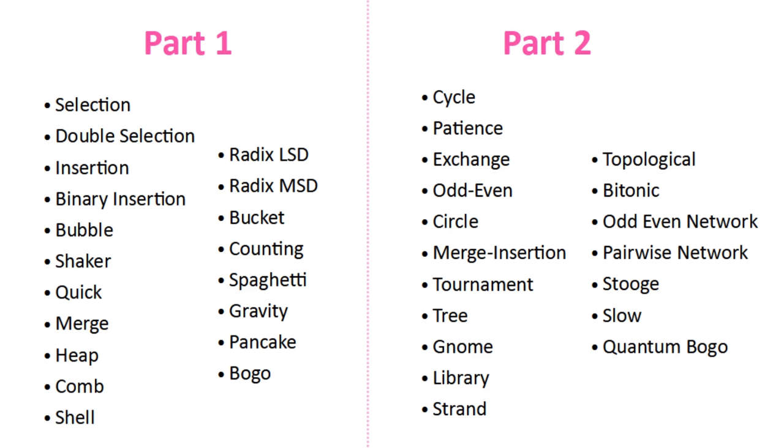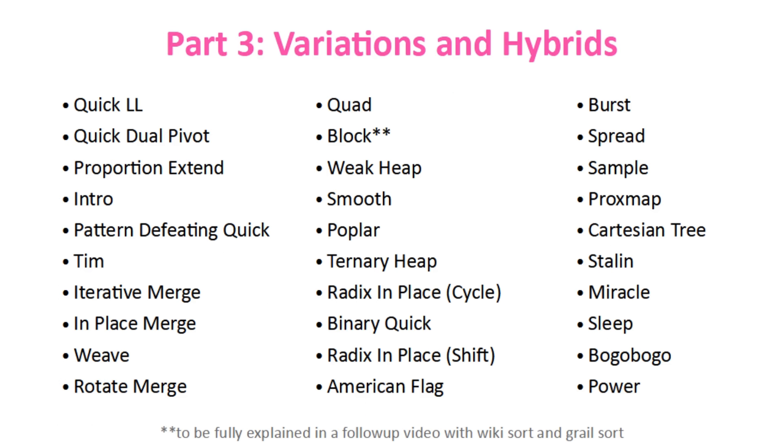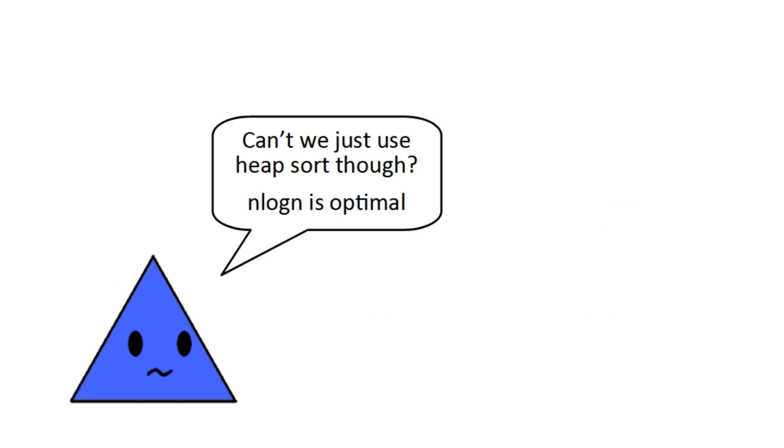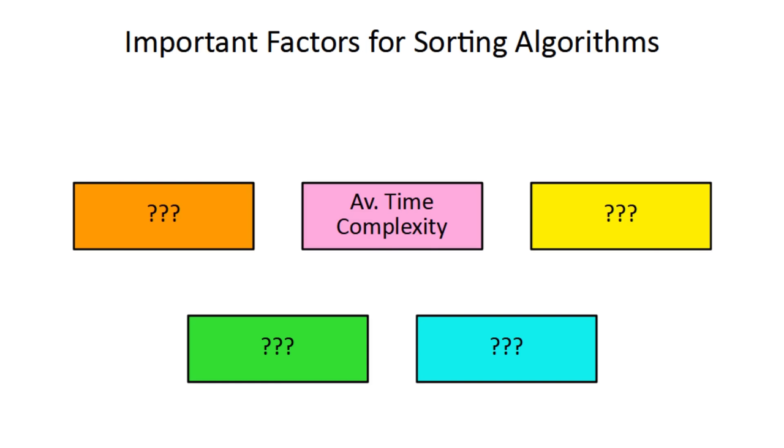The previous videos covered all these algorithms, and this one will cover variations and hybrids of those. Now you might wonder, what's the point of hybrid algorithms if we've already achieved optimal average time complexity? Well there are at least four more factors to consider, so we'll take a look at those first, and then get into the algorithms.